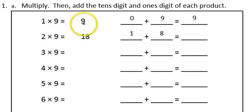1 times 9 is 9. Because 9 does not have a tens digit, we put 0 for the tens digit. 9 is the ones digit. 0 plus 9 is 9.